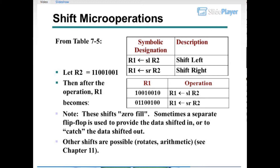Shift micro operations from the table: Let R2 = 10011001. Then after the operation, R1 becomes: SL R2 (shift left): 00110010. SR R2 (shift right): 01001100. Note these shifts zero-fill. Sometimes a separate flip-flop is used to provide the data shifted in or to catch the data shifted out. Other shifts are possible: rotates, arithmetic. See Chapter 11.